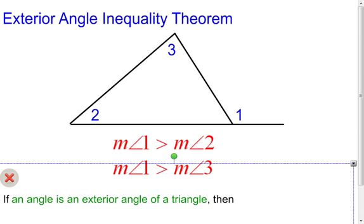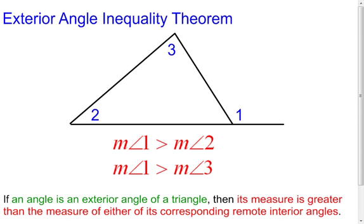So when everything is all said and done, there's what it looks like in inequality format, the actual theorem. As you can see here, it tells you that if an angle is an exterior angle of a triangle, then its measure is greater than the measure of either of its corresponding remote interior angles, which is kind of just a take-off of the exterior angle theorem.